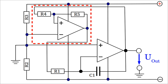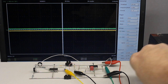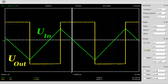A circuit suitable for that is a Schmitt trigger. The output signal of the integrator is connected to the input terminal of the non-inverting Schmitt trigger. The output of the Schmitt trigger jumps to the positive supply voltage whenever the output of the integrator reaches the upper threshold. Now the capacitor gets charged with reverse polarity until the output of the integrator reaches the lower threshold. The Schmitt trigger then jumps to the negative supply voltage, causing the output voltage of the integrator to increase again. The yellow curve displays the output of the Schmitt trigger, while the green curve displays the output of the integrator.